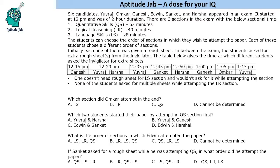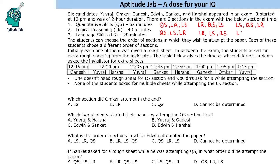There are 3 sections and 6 students, so there are 6 possible orderings and each student chose a different one. The six orders are: QS→LR→LS, QS→LS→LR, LR→QS→LS, LR→LS→QS, LS→QS→LR, and LS→LR→QS. These are the 6 ways in which these students attempted the paper.